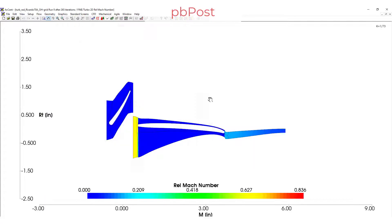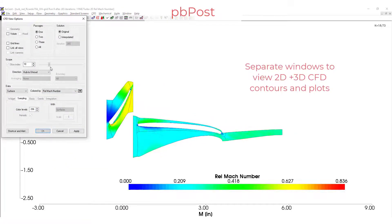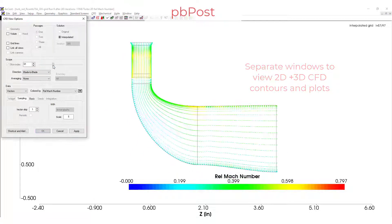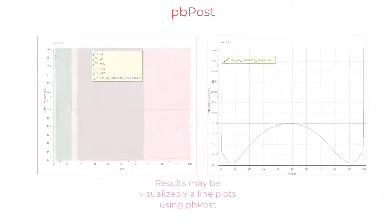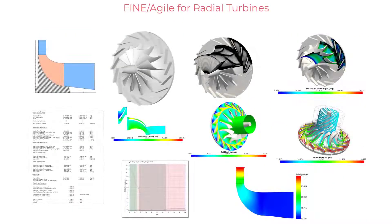If we prefer, we can look at things in two dimensions. Here, you will have all the same options at your fingertips as you did in the 3D view. You can view color contours, vectors, and we can even look at line plots, if desired. FineAgile for radial turbines is the solution for those looking to expand the horizons of their turbine design.